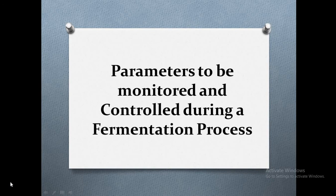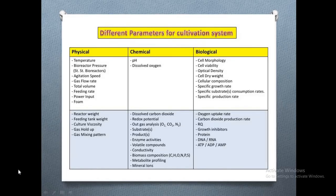During a fermentation process, lots of probes are involved — temperature control, pH control, dissolved oxygen control, and more. There are many parameters to be monitored, and these can be categorized into three types: physical, chemical, or biological parameters.